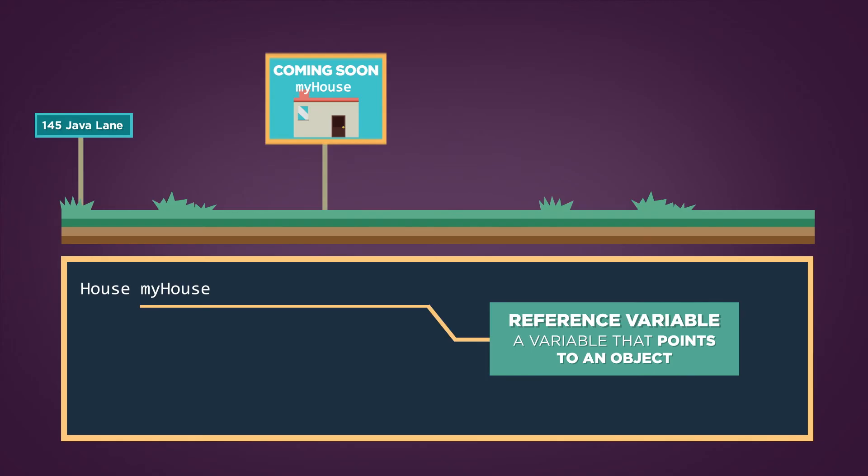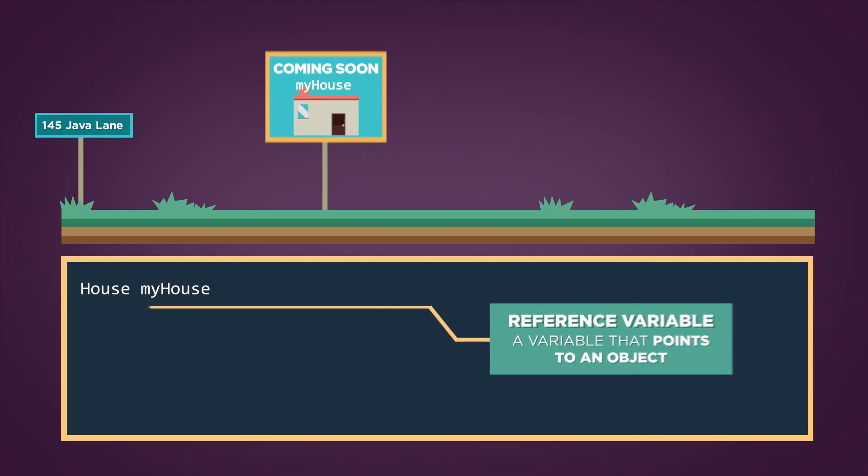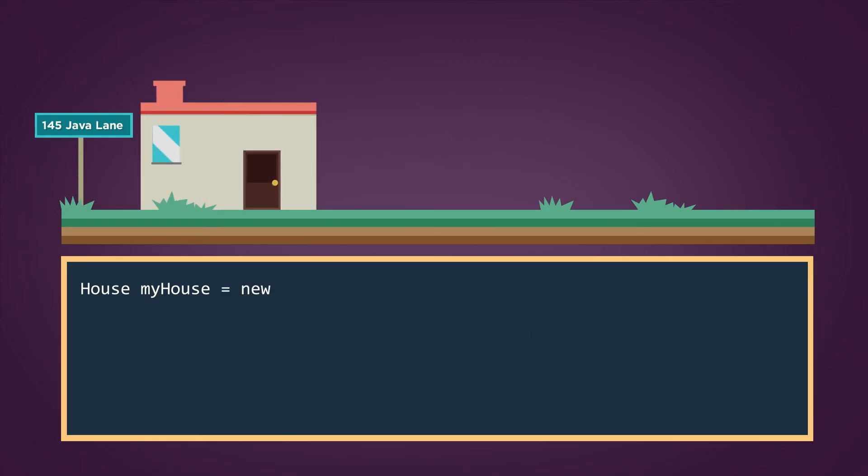Next we instantiate a house object for the reference variable to point to, like building a house at an address. We use the new keyword to indicate that we want to instantiate the new object. Then we indicate the type of object we want to create. To get the instructions for creating our house object we call its constructor using empty parentheses.